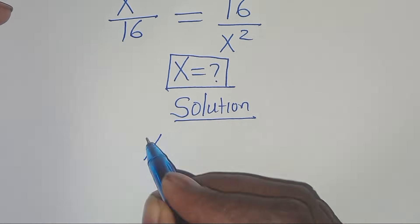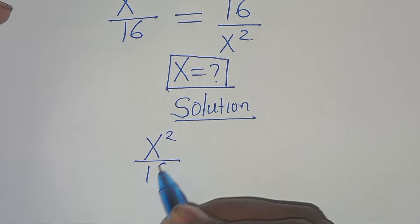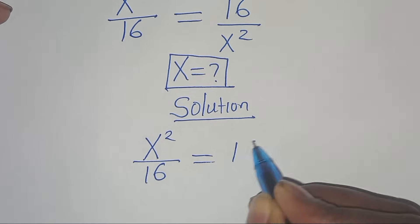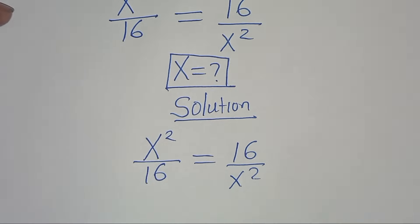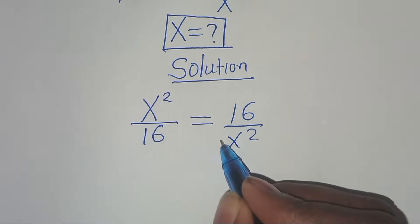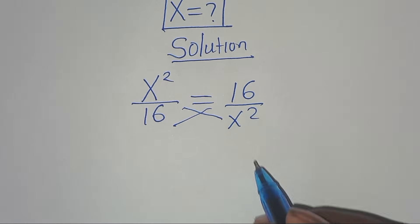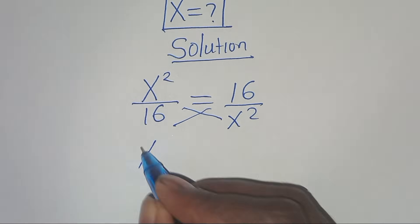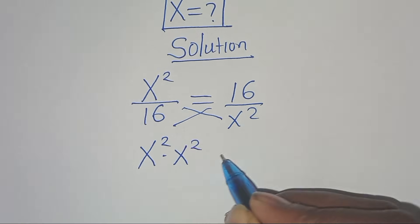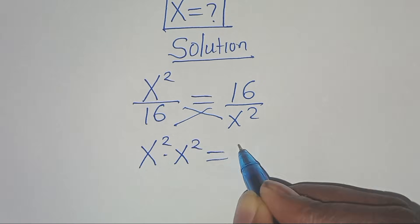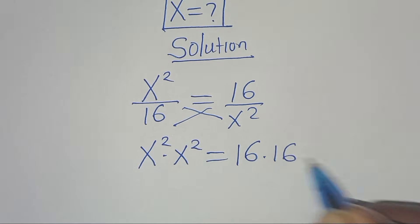We have x squared over 16 equals 16 over x squared. The first step is to cross multiply, so we get x squared times x squared equals 16 multiplied by 16.